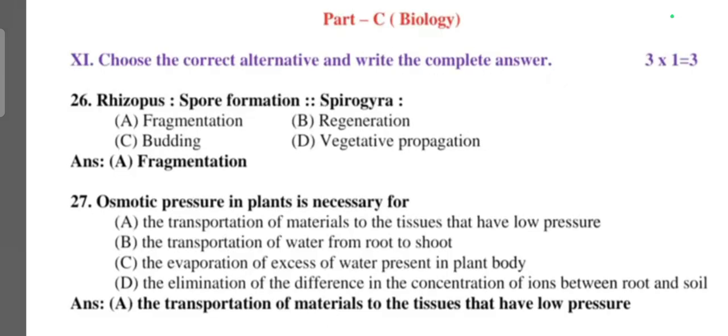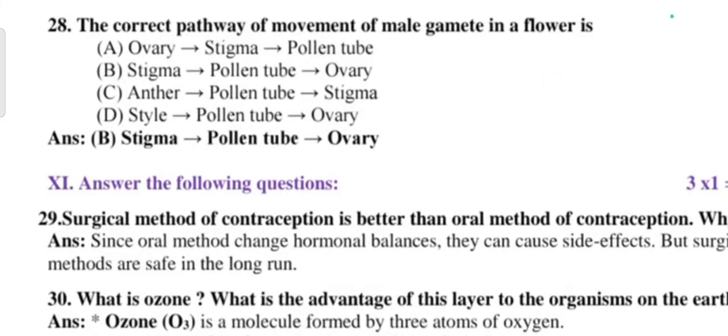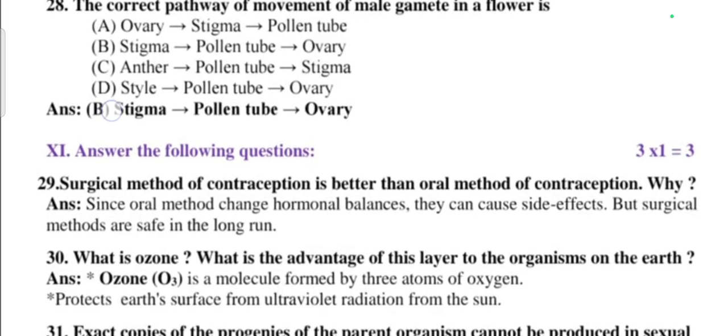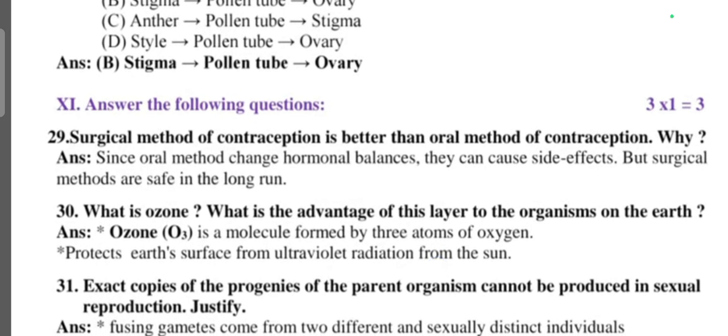Next, come to Part C. Rhizopus: spore formation. Spirogyra: fragmentation. Question number twenty-seven: osmotic pressure in plants is necessary for transportation of material to the tissue that have low pressure. The correct pathway of movement of male gamete in flower is stigma, pollen tube, and ovary. Next main, one more question. Surgical method of contraception is better than oral method of contraception. Why? Since oral method changes hormonal balance, they can cause side effects, but surgical methods are safe in the long run. What is ozone? What are the advantages of this layer? Ozone (O3) is a molecule formed by three atoms of oxygen. Protects the earth's surface from ultraviolet radiation from the sun.